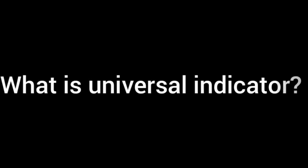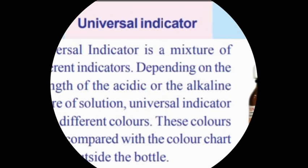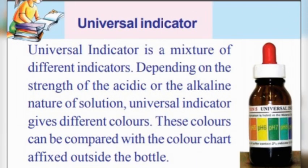What is universal indicator? Universal indicator is a mixture of different indicators. Depending on the strength of the acid and alkaline nature of the solution, universal indicator gives different colors.